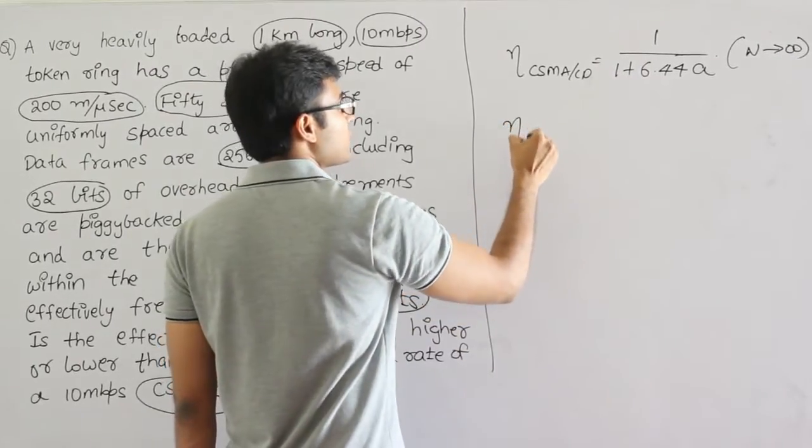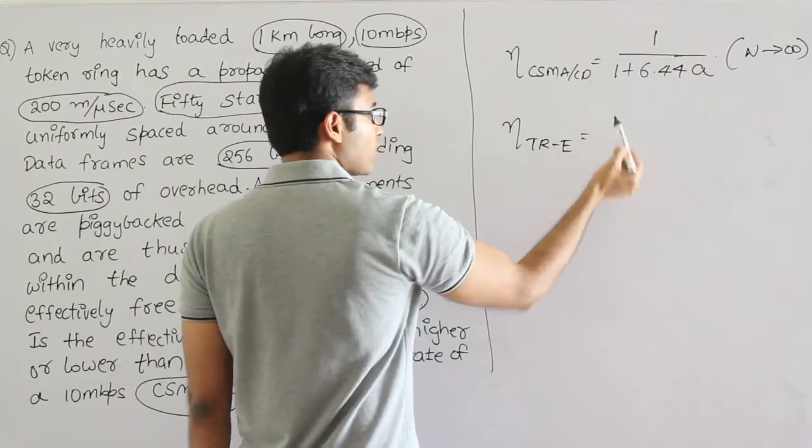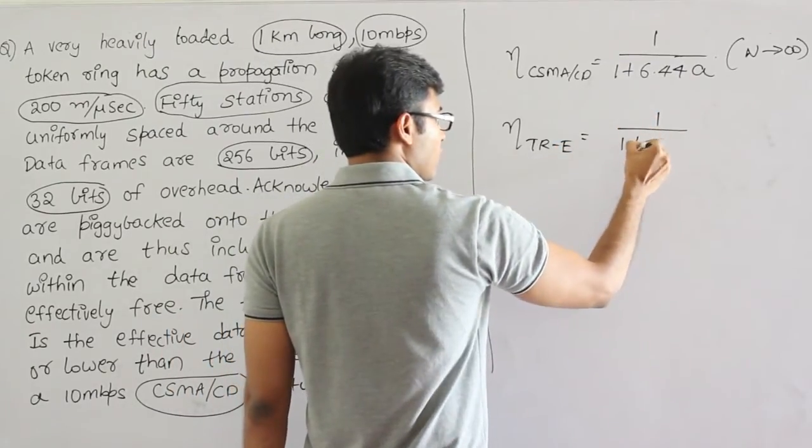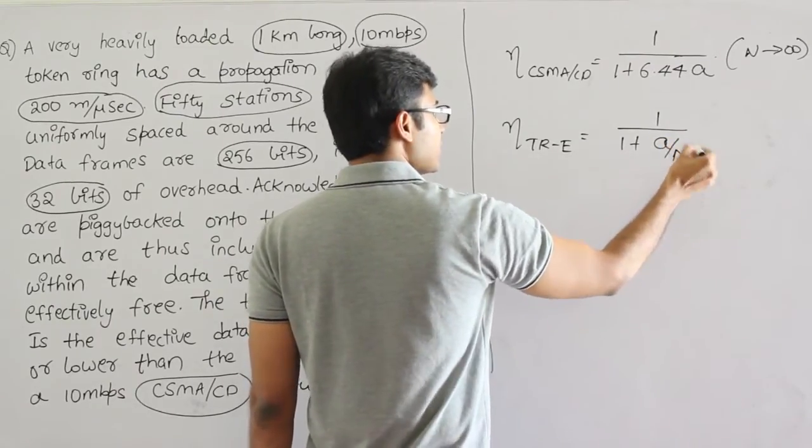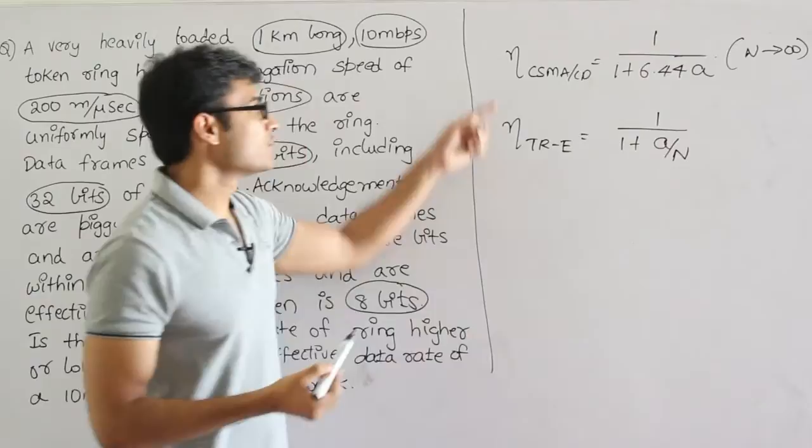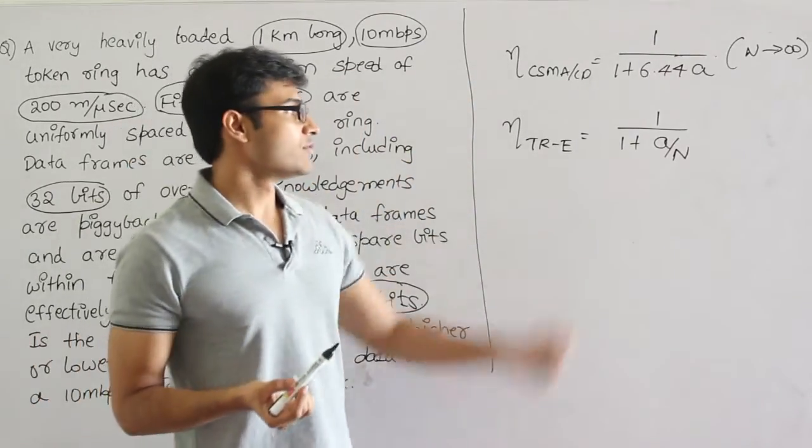What is the efficiency of Token Ring? Token Ring has two strategies. Early token reinsertion efficiency is 1 upon 1 plus A by N. But here N is still taken, so we cannot compare these two unless we again make an assumption that N is infinity.